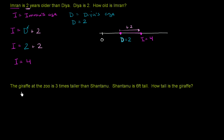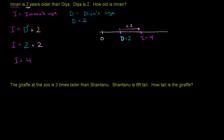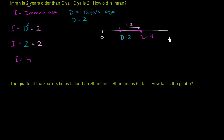We're told that the giraffe at the zoo is three times taller than Shantanu. Shantanu is six feet tall. How tall is the giraffe? I encourage you to pause this video and try to think about it on your own. Let's use letters to represent the different heights: G for giraffe and S for Shantanu. The giraffe's height is equal to three times Shantanu's height: G = 3 × S.